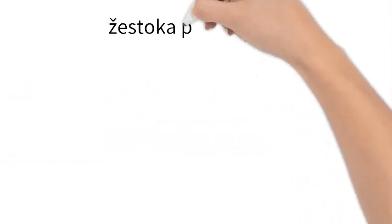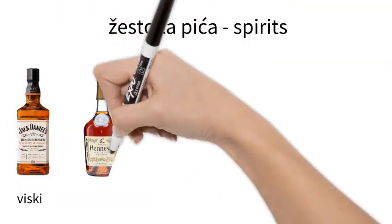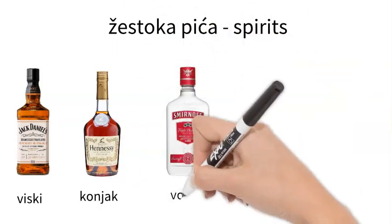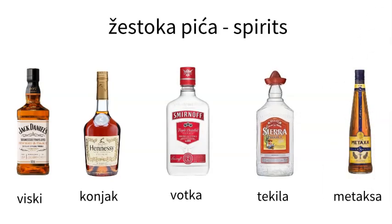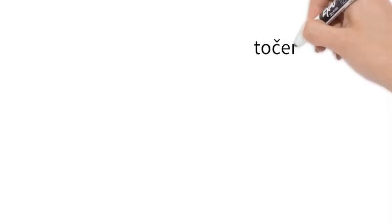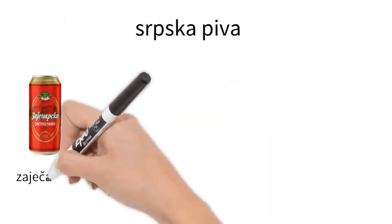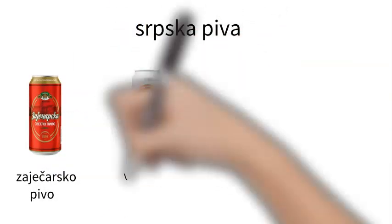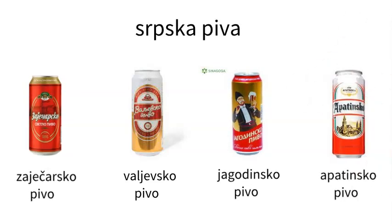Except this, you can also order other spirits like whisky, konjak, vodka, tequila, metaksa. If you like beer, then you will have the option of so called točeno pivo, or draft beer, and a lot of Serbian beers like Zaječarsko, Valjevsko, Jagodinsko, and of course typical international beers, which you will recognize for sure.